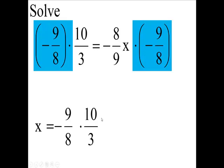Now, we're going to cancel the 10 and the 8, going to divide both of them by 2. 10 divided by 2 is 5, 8 divided by 2 is 4, and we can do the same thing with the 9 and the 3. We'll divide both of those by 3. 9 divided by 3 is 3.